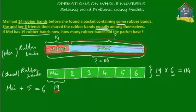So this entire thing — red plus blue — is 114. How much is just the blue part? Well, it's 114 minus 14, which equals 100. So the packet contained 100 rubber bands. That's the answer: the packet had 100 rubber bands.